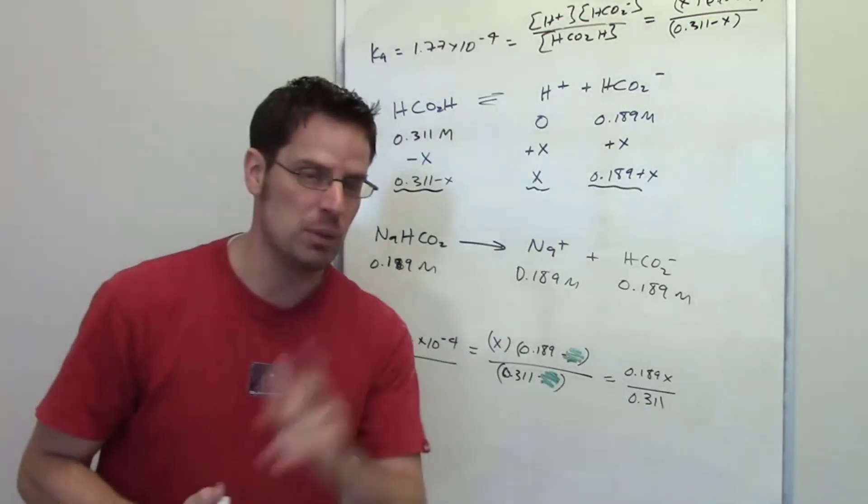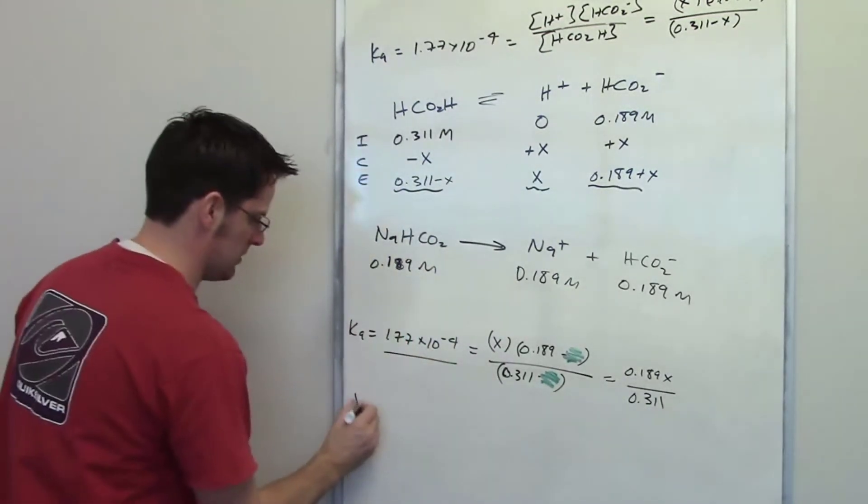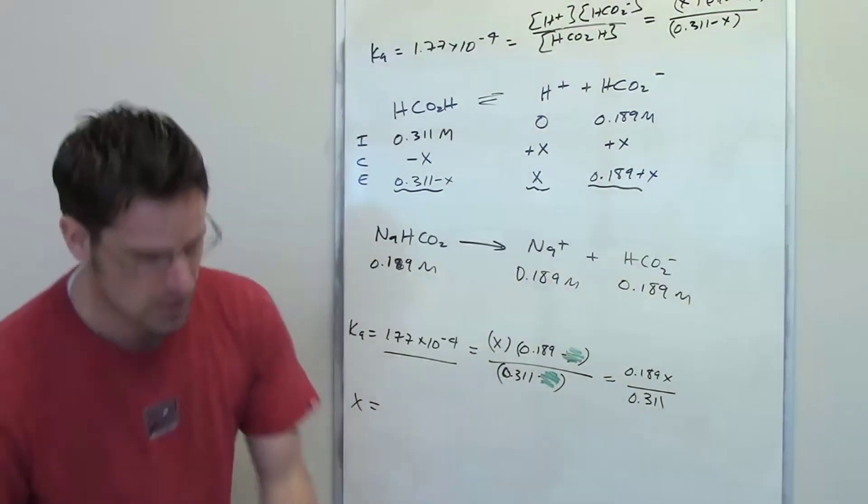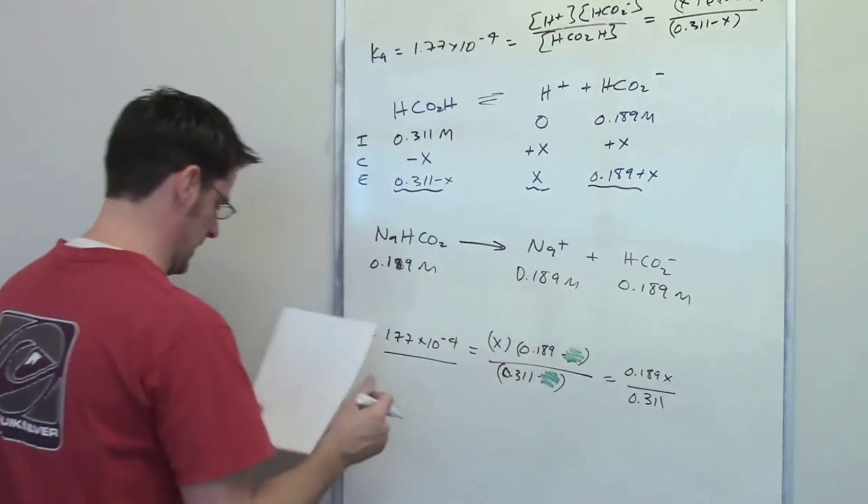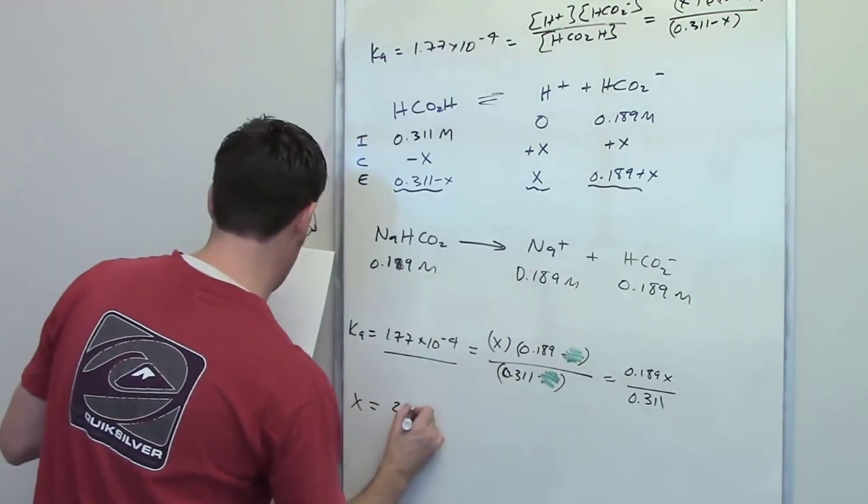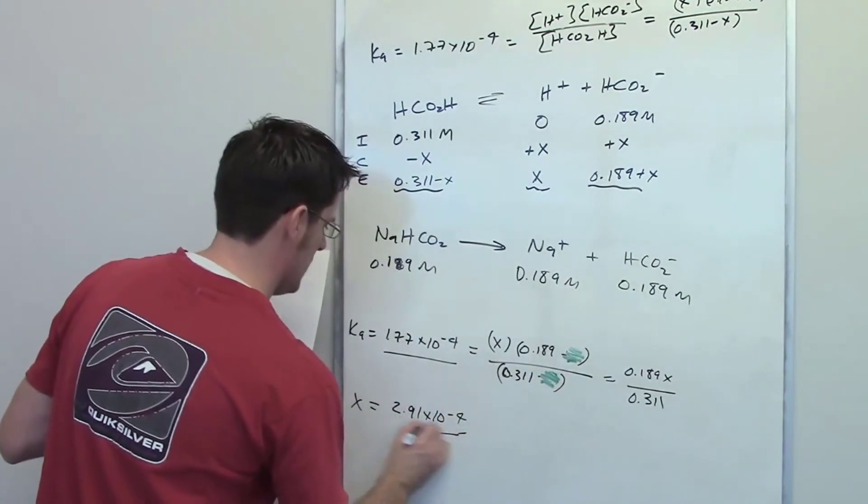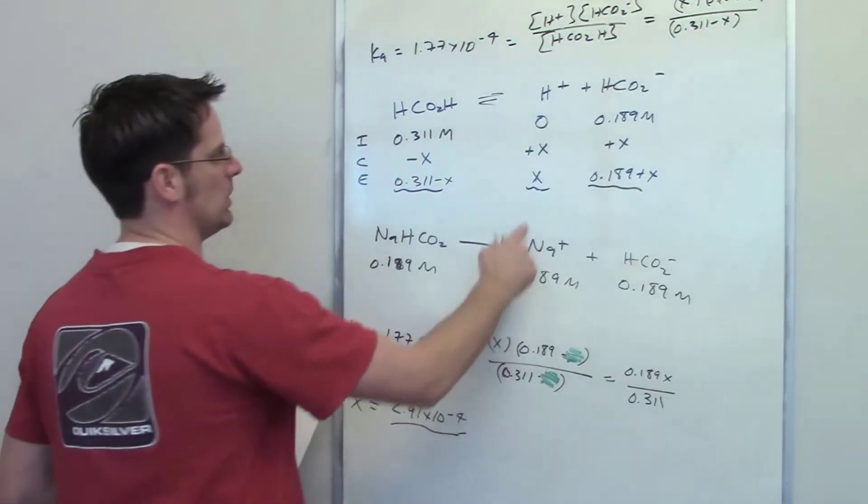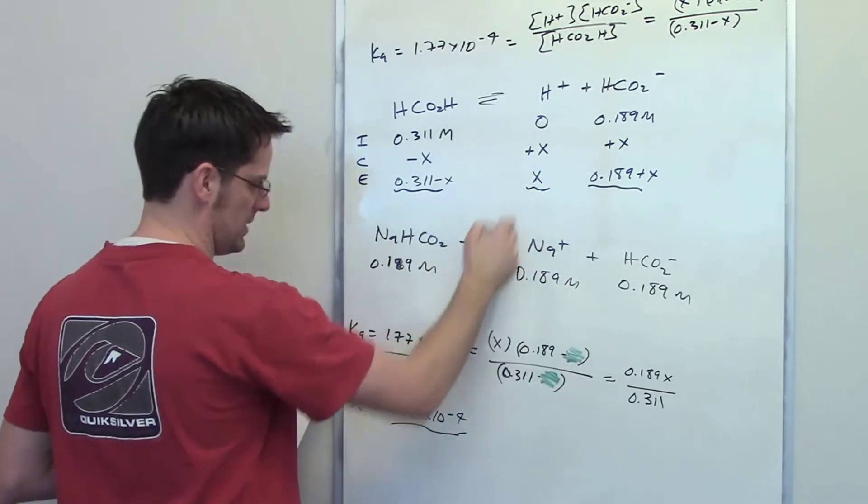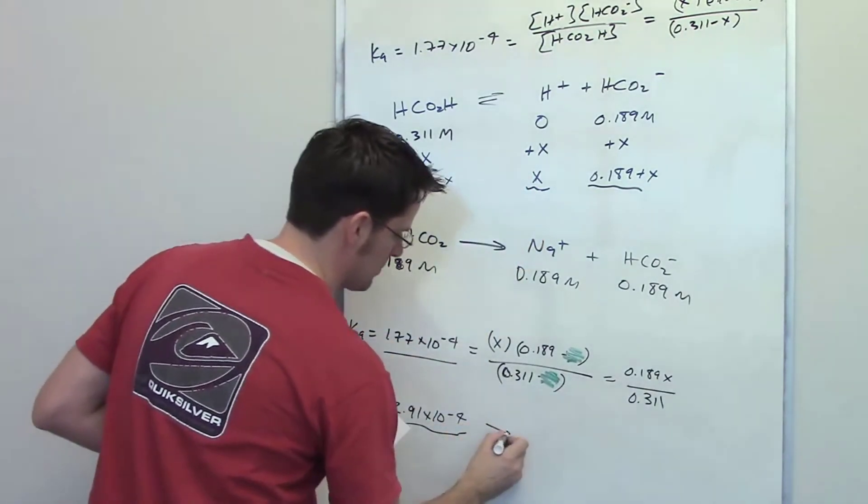Using the magic of algebra, I'll have you solve for X. You can go ahead and try that now if you like. When I did that, I ended up getting a value of X of 2.91 times 10 to the negative fourth. Now because X is the equilibrium concentration for H plus.